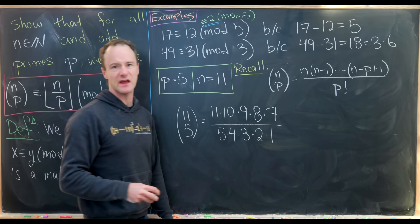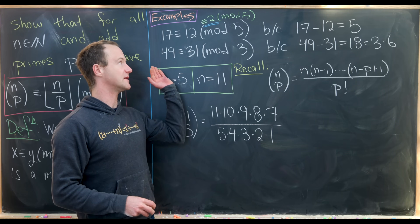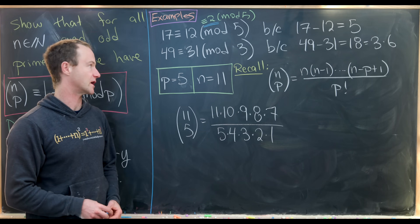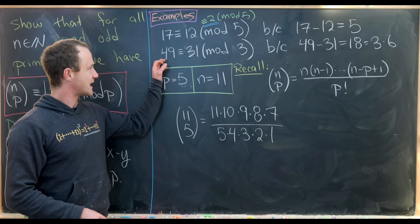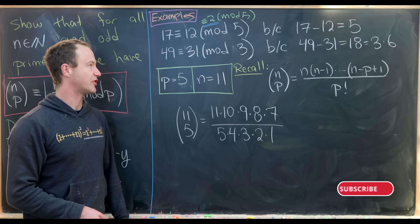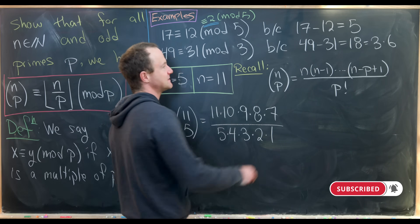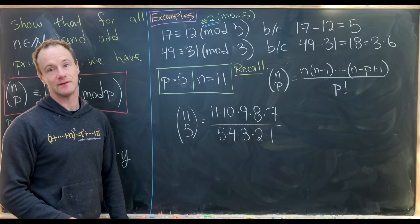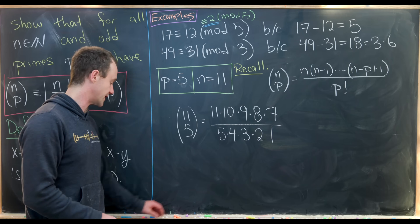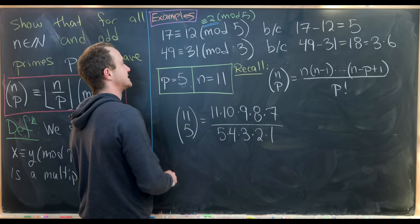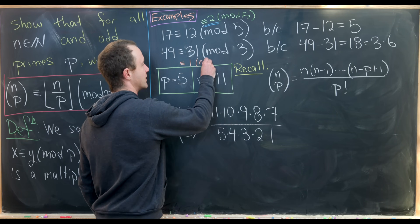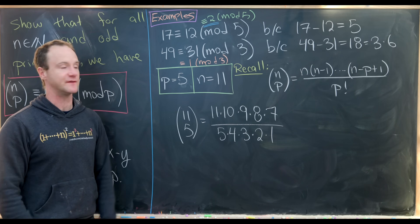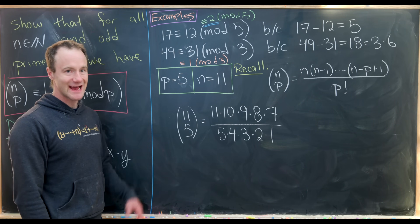This congruence to 2 mod 5 is the way we really want to think about it, because we can always think about a congruence between 0 and p minus 1. Next, 49 is congruent to 31 mod 3 because 49 minus 31 is 18, which is 6 times 3 — a multiple of 3. Each of these is also congruent to 1 mod 3, since dividing by 3 gives remainder 1.